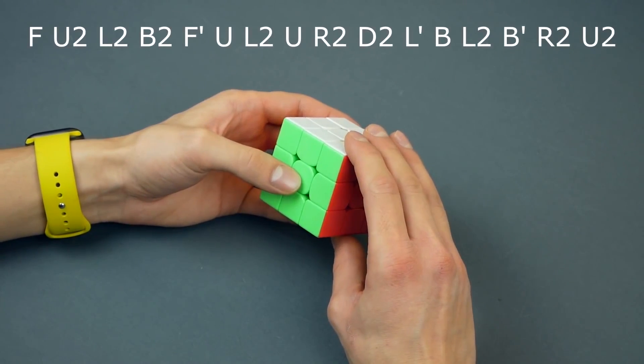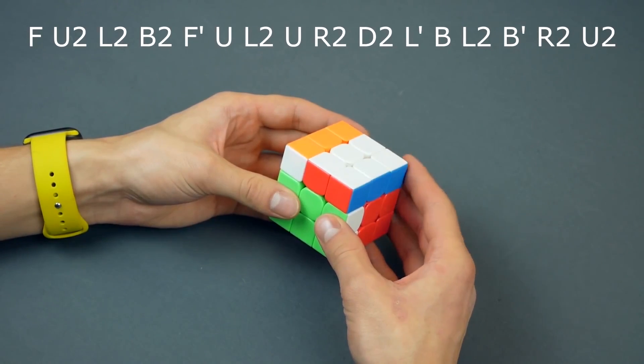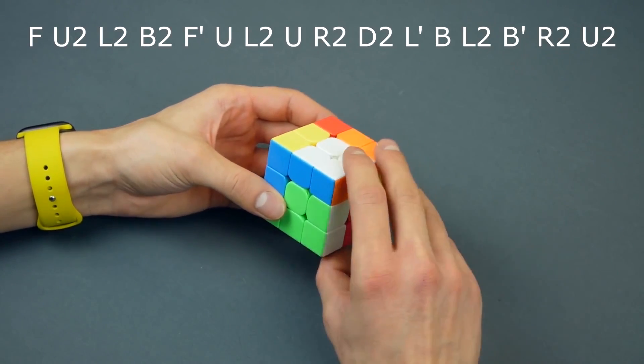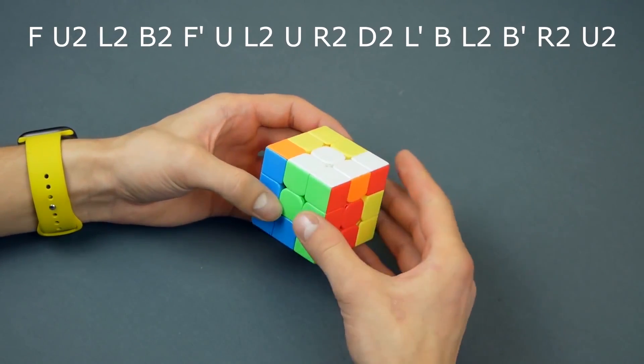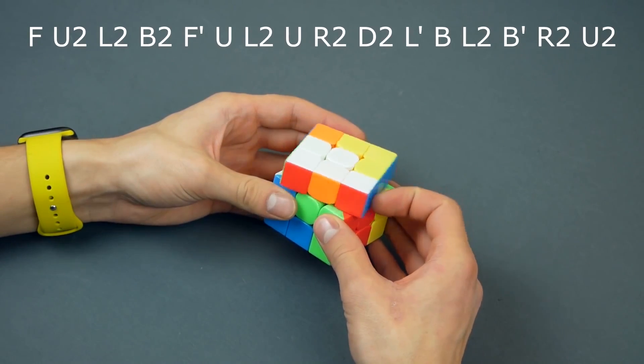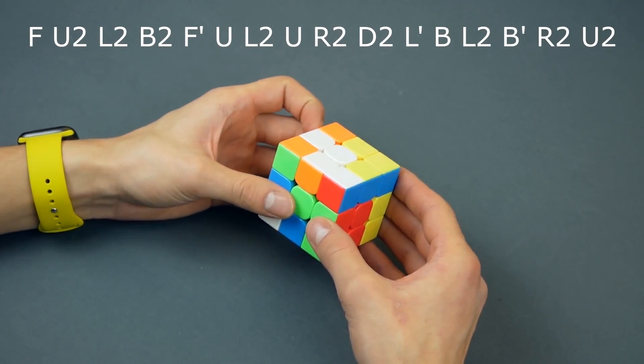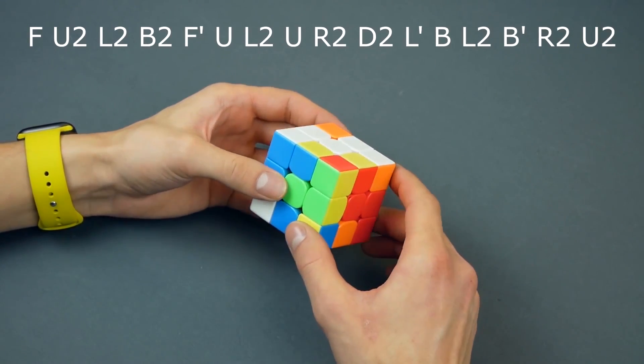Turn your front face clockwise. Up two times. Left two times. Back two times. Front counter clockwise. Up clockwise. Left two times. Up clockwise. Right two times. Down two times.